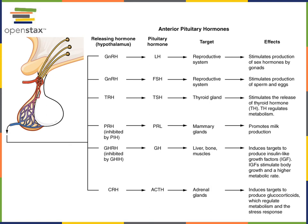Prolactin-releasing hormone (PRH) stimulates the anterior pituitary to release prolactin, a hormone that stimulates the mammary glands to produce milk. During the end of pregnancy and following pregnancy, prolactin stimulates milk production. This is different from the action of oxytocin, which stimulates the release of milk — prolactin prepares the mammary gland to produce milk, and then in response to suckling, oxytocin stimulates the positive feedback mechanism for milk release.